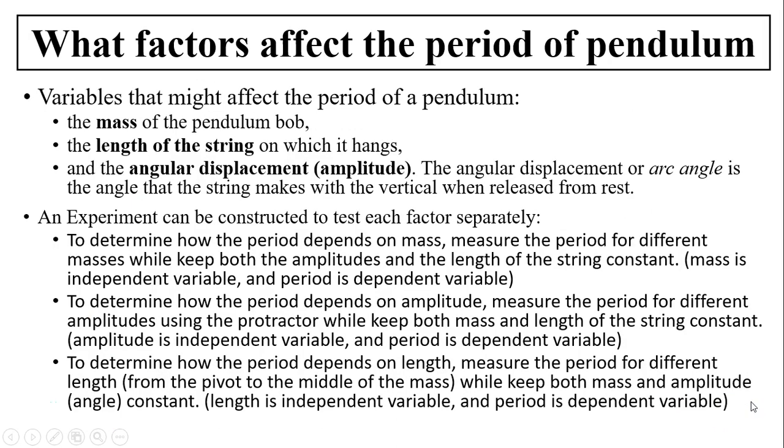What factors affect the period of pendulum? So think about a pendulum. Pendulum basically has three things: the mass of the bob, the length of the string, and the angular displacement. So we can set up an experiment to test which of these three factors determine the pendulum's period.